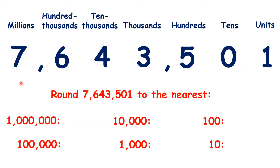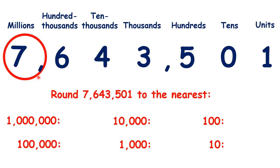Now we have 7,643,501. Pause the video and see if you can round this number to each place value. To the nearest million, we look to the hundred thousands, and we're rounding up, so we have 8,000,000.